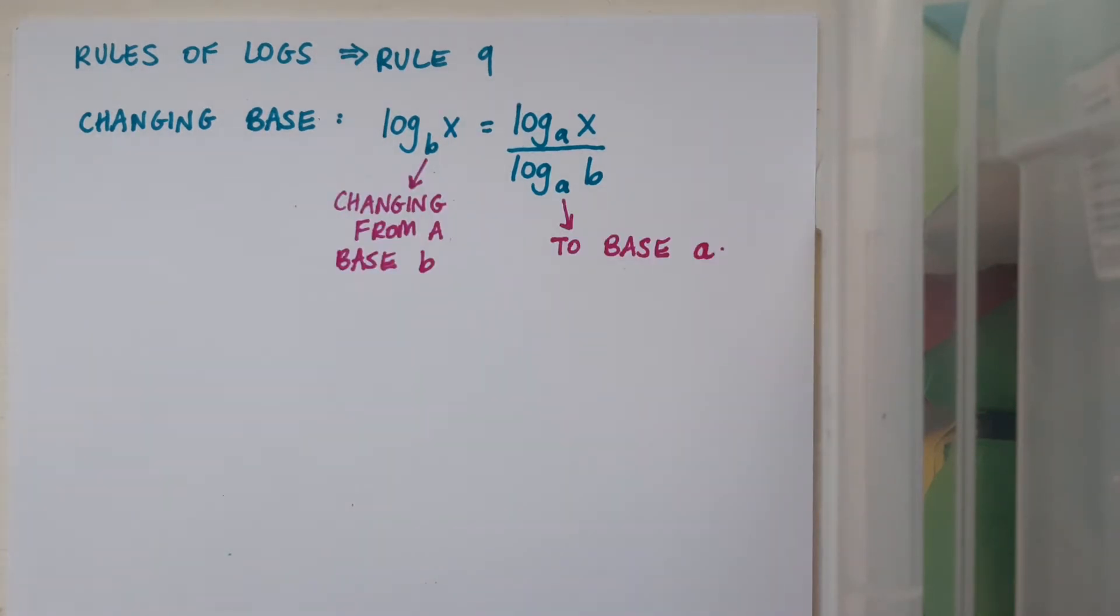And we use this if we want to change from one base to another. So in the rule we're changing from a base of b to a base of a. So here's an example. We have log to the base 4 of 8 and I want to change it to a base 2.